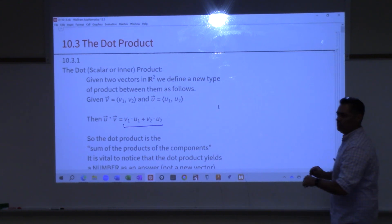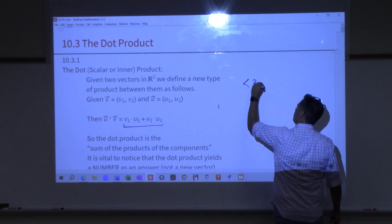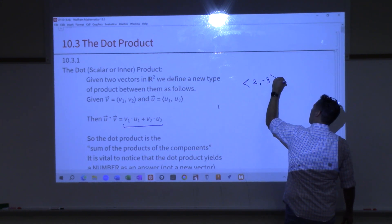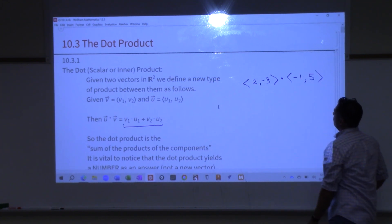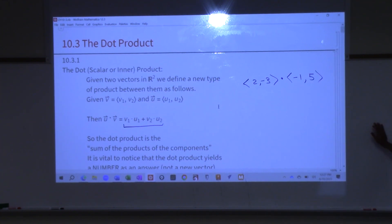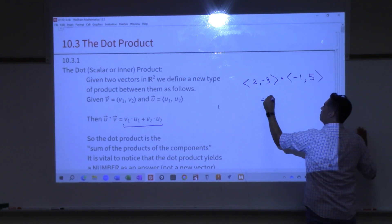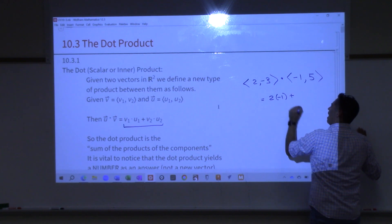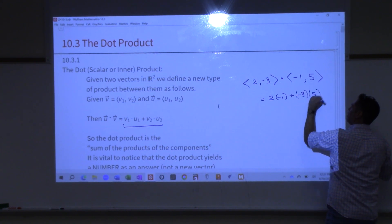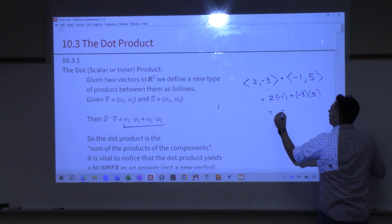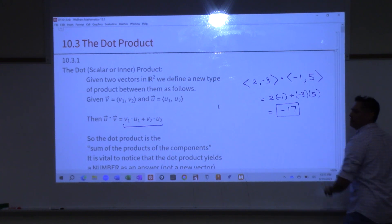Let's do an example. If I give you the vector (2, -3) and dot that with (-1, 5): I do 2 times -1, add to that -3 times 5, and this is -17. That's what we get — negative 17.